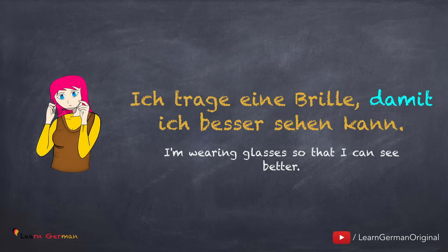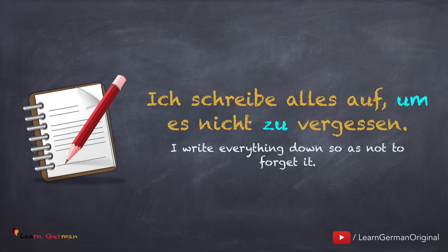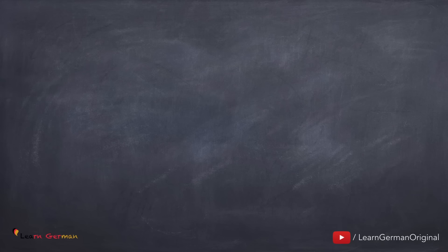Hier erstmal ein paar Beispiele. Ich trage eine Brille, damit ich besser sehen kann. So hier die Absicht ist ganz klar — wozu ich eine Brille trage. Und hier ist der nächste Satz: Ich schreibe alles auf, um es nicht zu vergessen.